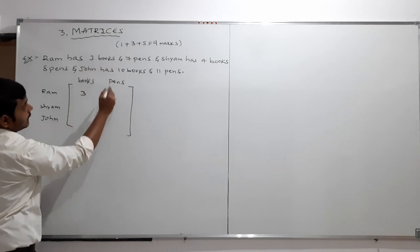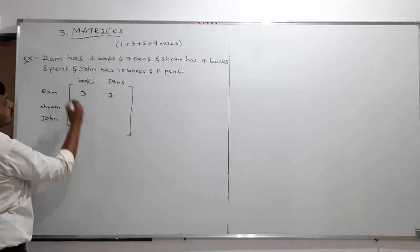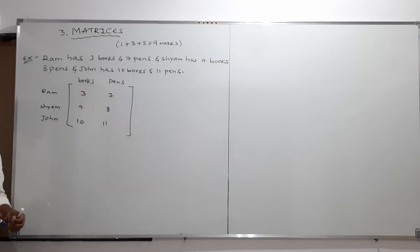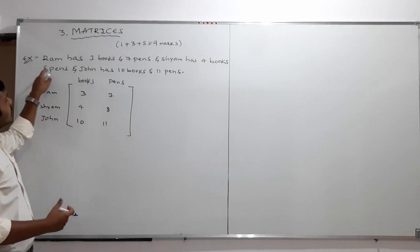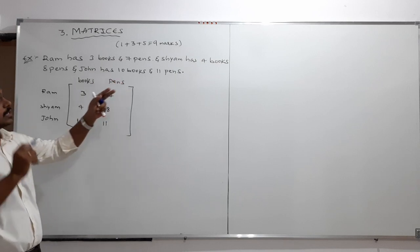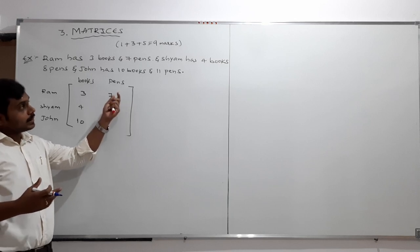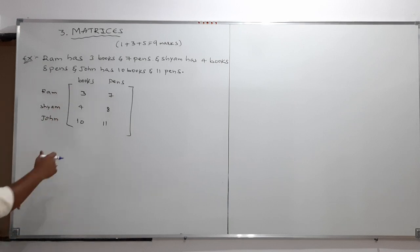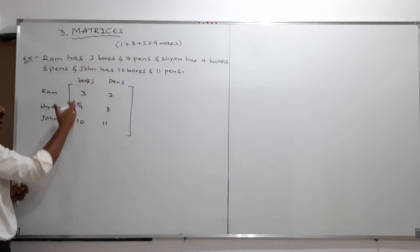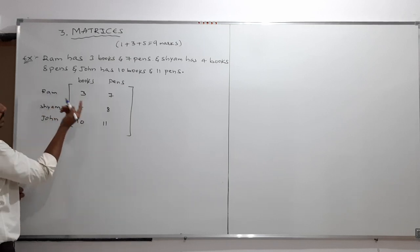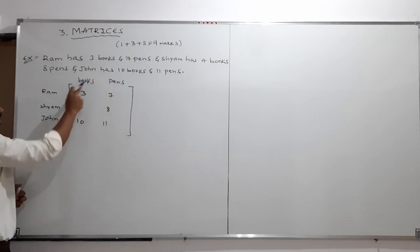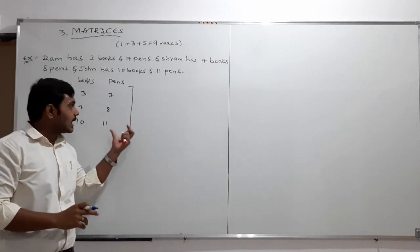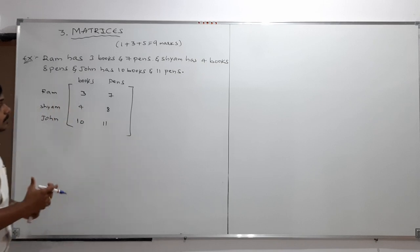Ram has 3 books and 7 pens. Shyam has 4 books and 8 pens. And John has 10 books and 11 pens. Whatever information we have in sentence form, I am writing it within the bracket. By writing this way, instead of reading all those sentences and getting confused, you can directly observe the bracket and easily understand: Ram has 3 books and 7 pens, Shyam has 4 books and 8 pens, and John has 10 books and 11 pens.